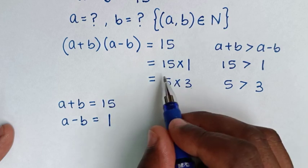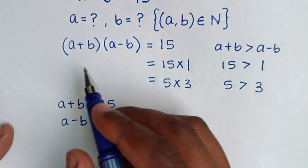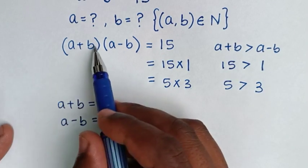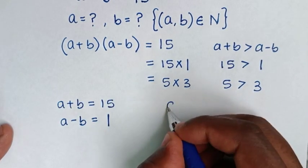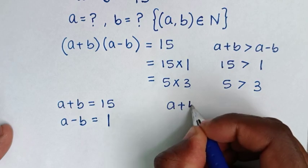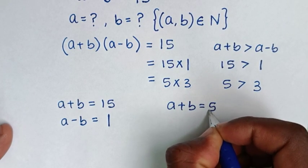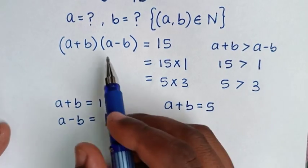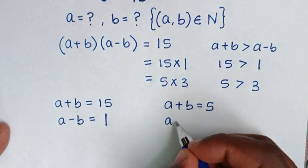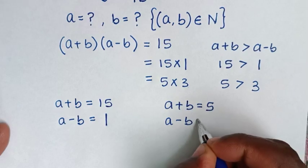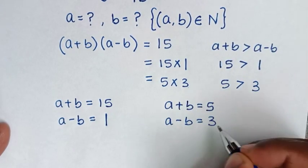For the second choice, we have a plus b is equal to 5, and a minus b is equal to 3. This gives us our second system of equations.